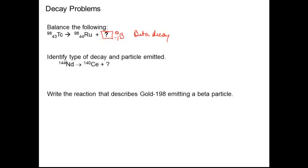Here it wants you to identify the type of decay and the particle emitted. So again, it's a fill in the blank. So let's see what happens. 144 and 140, so I need a 4 here. And on the bottom, if I look up ND that is 60 and cerium is 58, so this should be a 2. So it's alpha decay.